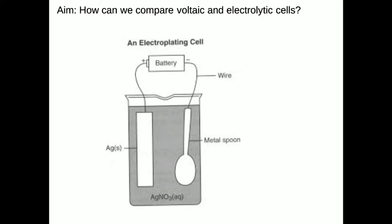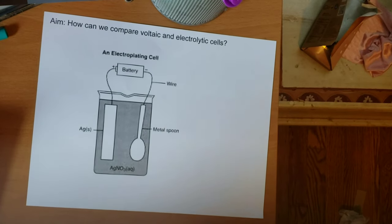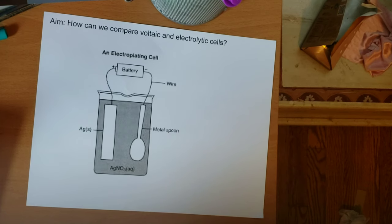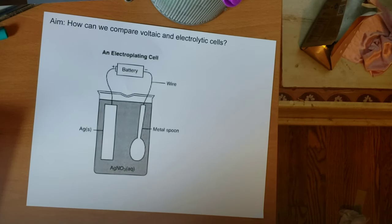Can you label the anode and the cathode, the direction of electron flow, and the direction of anion movement in the solution? Take a minute to look at this diagram and try to label the anode and the cathode, the charges, and the direction of electron flow through the wire, and the direction of ion flow in the solution.